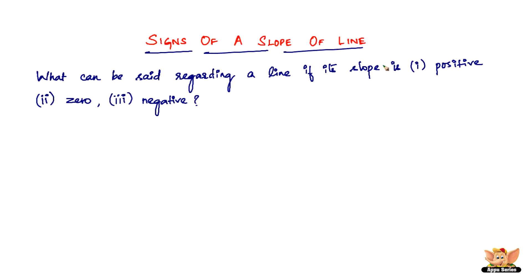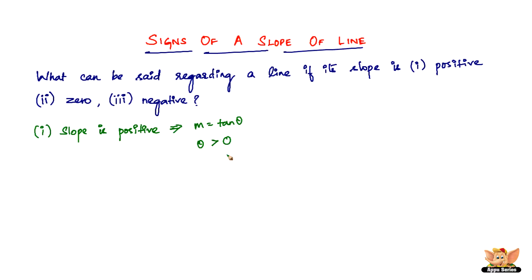When the slope is positive, we have slope m equals tan theta. If you need to get the slope as positive and not zero or negative, theta has to be greater than zero and less than 90 degrees. So theta lies between 0 degrees and 90 degrees, meaning the inclination theta is an acute angle.